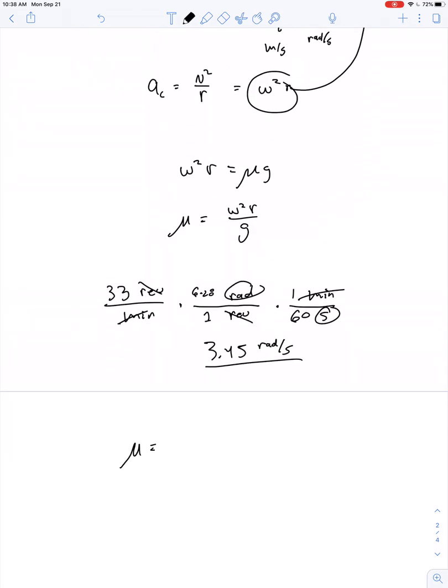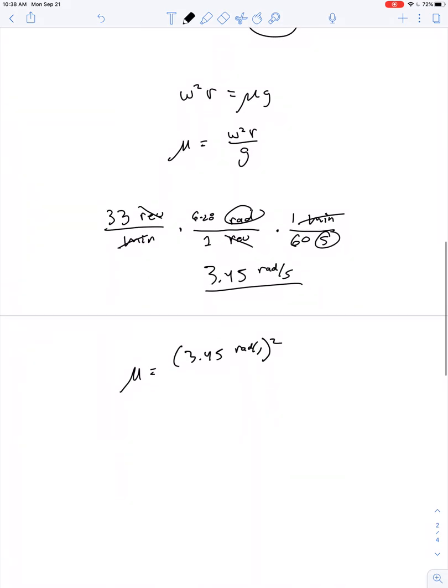So μ is equal to 3.45 radians per second quantity squared times a radius of 13 centimeters, 0.13 meters divided by 9.8 meters per second squared. Radians are just a placeholder when it comes to units. So these seconds get squared and cancel with those seconds squared. And then we're just left with no units at all because the meters also cancel out. And so we get a value of μ that has to at least be equal to 0.16.